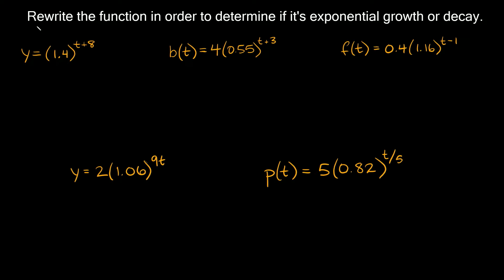The next set of examples says: rewrite the function in order to determine if it's exponential growth or decay. You'll notice the exponent is a bit different — instead of just t, we have things like t + 8, t + 3, t − 1, 9t, or t ÷ 5. Whenever you're determining growth or decay, you need to isolate t in the exponent by itself. These exponent rules can be tricky, so I'll show you an example of each type.